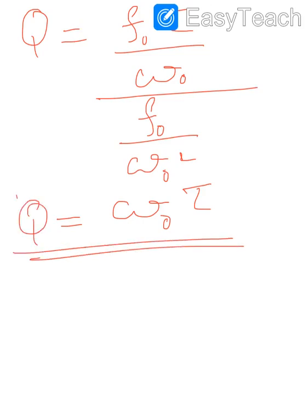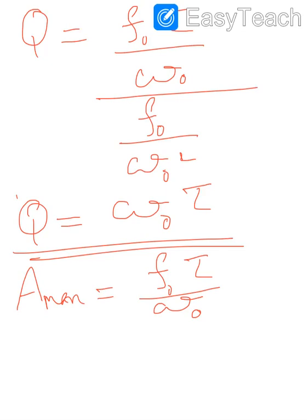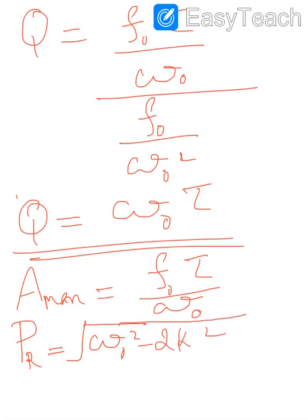The quality factor is the ratio of the amplitude at driving frequency approximately equal to ω₀ to the amplitude at driving frequency equal to zero, giving Q = ω₀τ. In summary: the maximum amplitude of a forced harmonic oscillator is f₀τ/ω₀, where τ is the relaxation time and ω₀ is the natural angular frequency. The resonant frequency is pᵣ = √(ω₀² − 2k²), and when damping is very low (k ≈ 0), pᵣ ≈ ω₀, which is the condition for maximum amplitude.